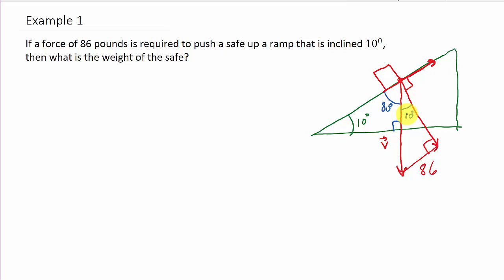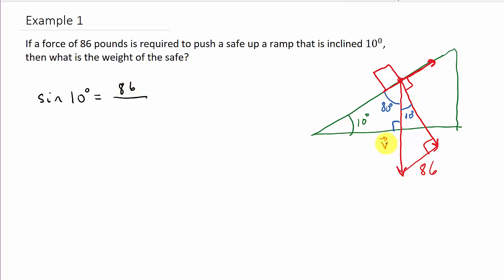Look what we've got: a right triangle. We know this angle is 10 degrees, we know the side opposite which is 86, and we're looking for the hypotenuse. Opposite over hypotenuse — that's the sine. So we know sine of 10 degrees equals 86 over the hypotenuse, and that hypotenuse is the magnitude of V.